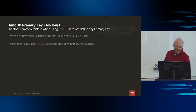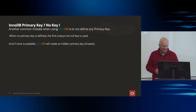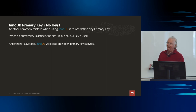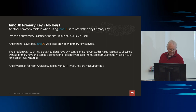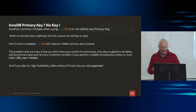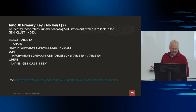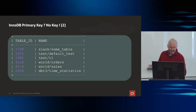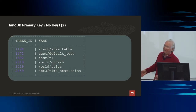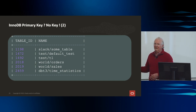If you don't define a primary key, we have to have one, so we're going to create a hidden one — and those are six bytes long. You don't have control over this thing, so you really should define a primary key. We can run this query to determine which tables haven't had a primary key defined. There's a hidden one in those cases, and that's a problem.